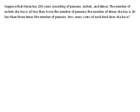Section 2.1, problem 61. Suppose that Maria has 150 coins consisting of pennies, nickels, and dimes. The number of nickels she has is 10 less than twice the number of pennies. The number of dimes she has is 20 less than 3 times the number of pennies. How many coins of each kind does she have?